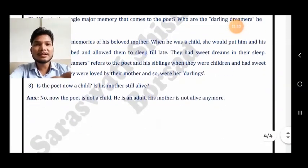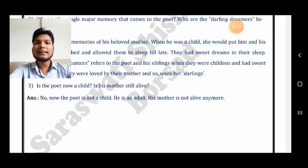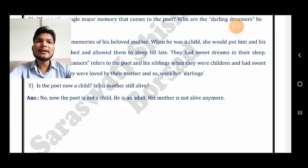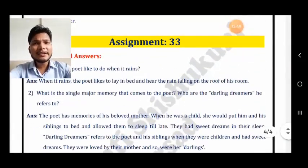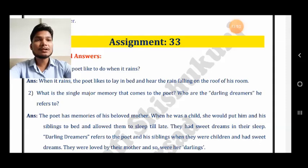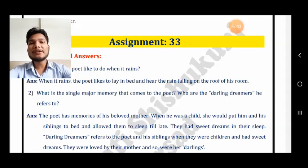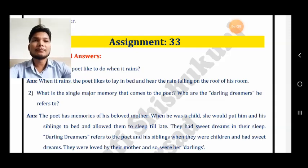Third question: is the poet a child now? Is his mother alive? The poet is not a child now but a grown-up person, and his mother is not alive anymore. In the memories of his mother he writes this poem. Only three questions are discussed here, but any kind of question can be asked. Please read the whole poetry so that you can have more idea about the poem.